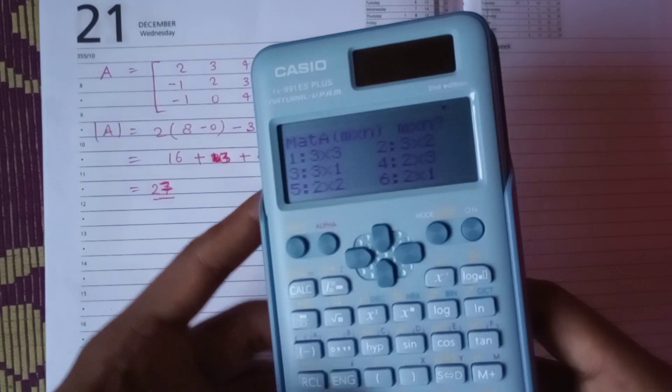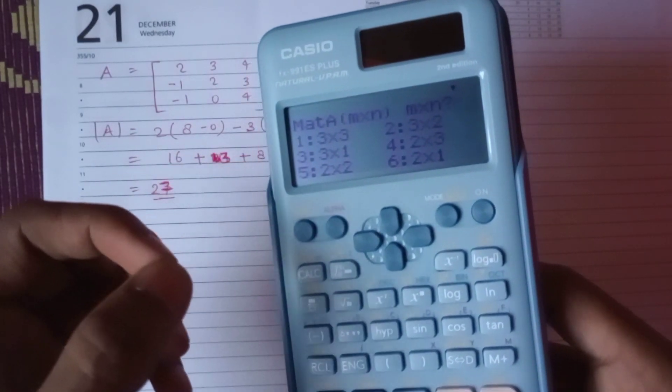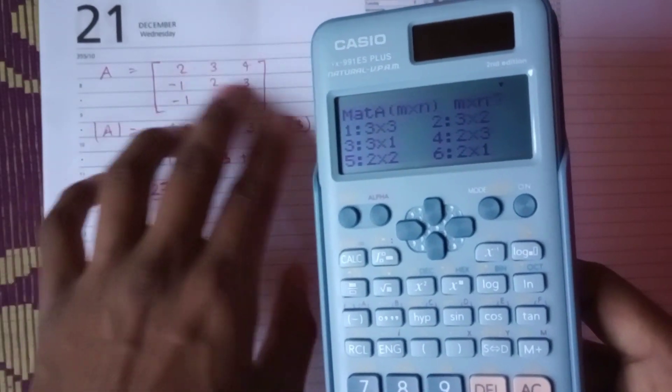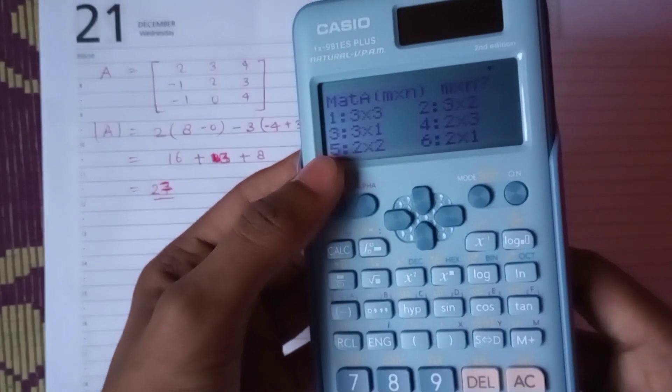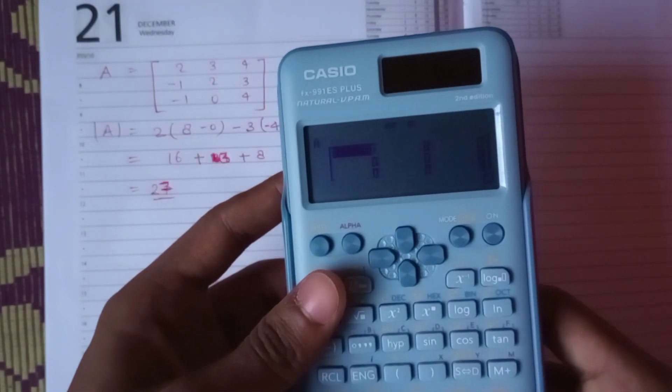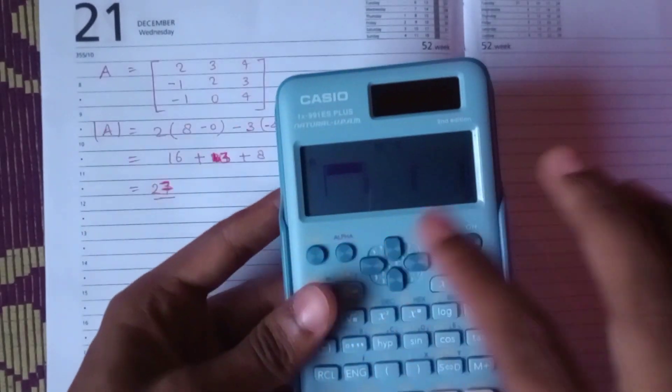Now you have to know your matrix dimensions. It's three by three - three rows and three columns. So we press one, and now just put all the values in the calculator.